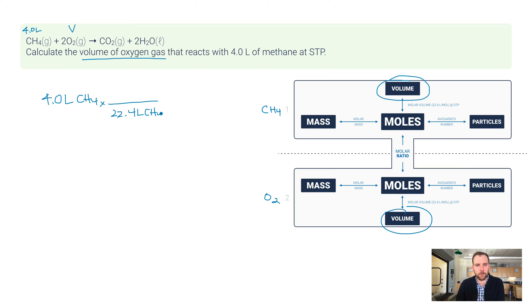Here I go: 4.0 liters of CH4 times—22.4 liters of CH4 on the bottom, 1 mole of CH4 on the top. This is how I would employ the molar volume conversion factor to convert from liters into moles. Now I want to multiply by the molar ratio, and then I want to finish by multiplying by that molar volume again. This is where I need the coefficients from the balanced equation. On the bottom I have 1 mole of CH4, on the top I have 2 moles of O2.